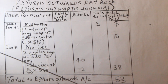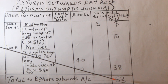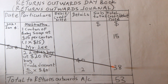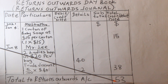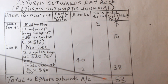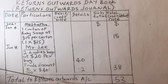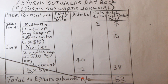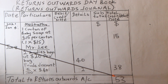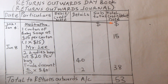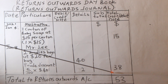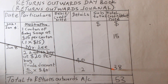We now sum up. Assuming these are the only returns for the period, $15 plus $38 gives us $53. This is the total that we are going to post to the Return Outwards account — that is $53. The purpose of the Return Outwards Day Book is to summarize all goods returned to various suppliers before posting to the ledger.